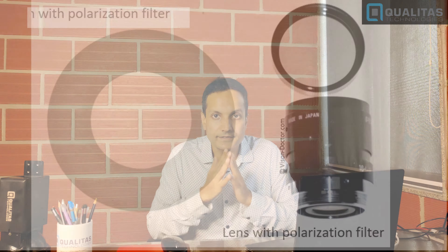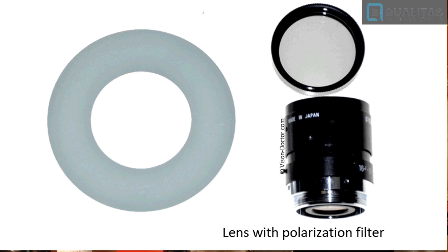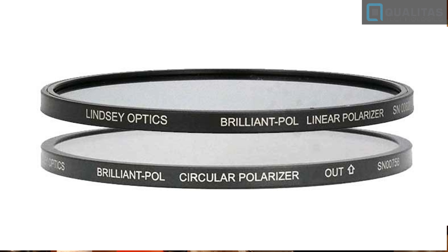Another way of solving this is to use polarizers. A polarizer has the effect of filtering light sources and aligning the light rays which are only coming in uniformly in one direction. You have linear polarizers and circular polarizers, and depending on what you want to filter out, you could use that as well.